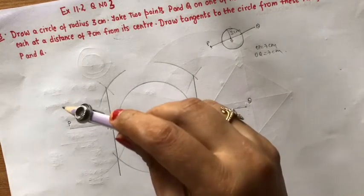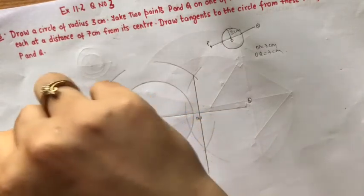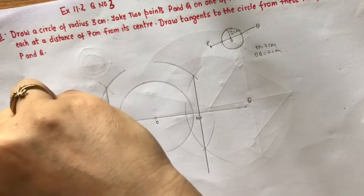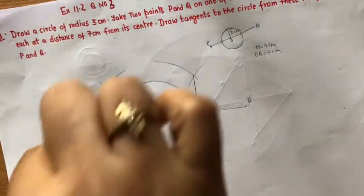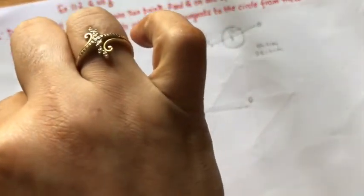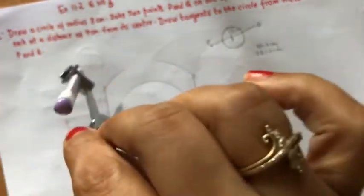Next step, take MP or MO, whatever you feel, both are equal as radius, and draw the circle.